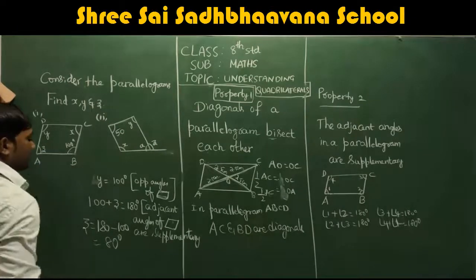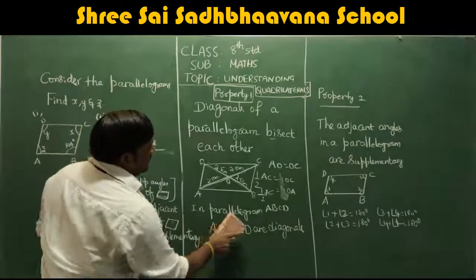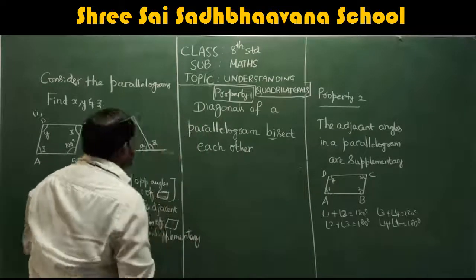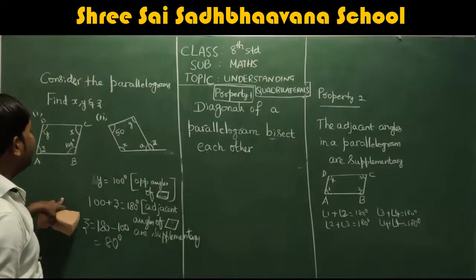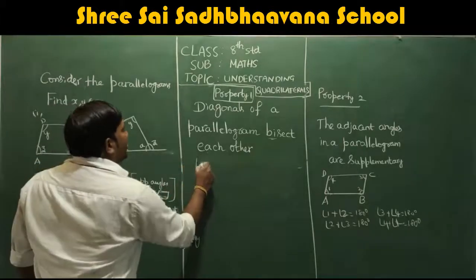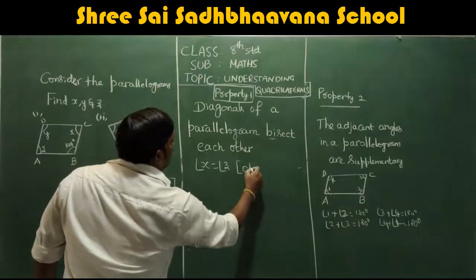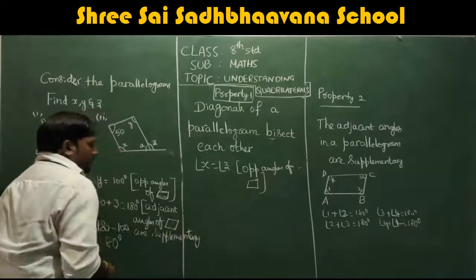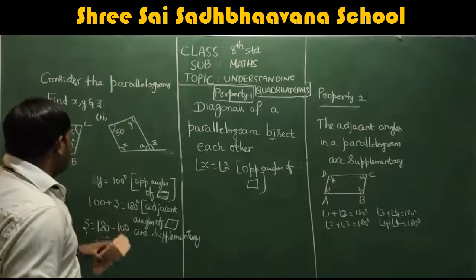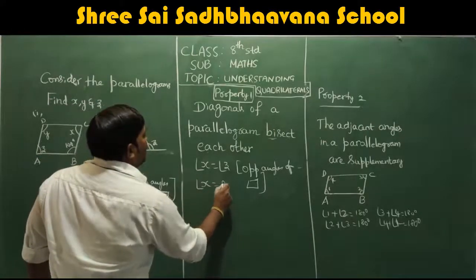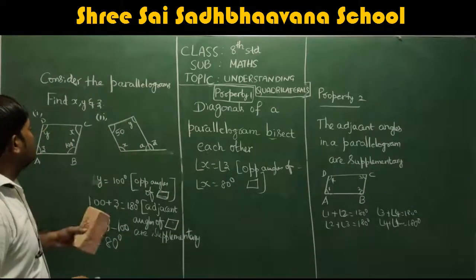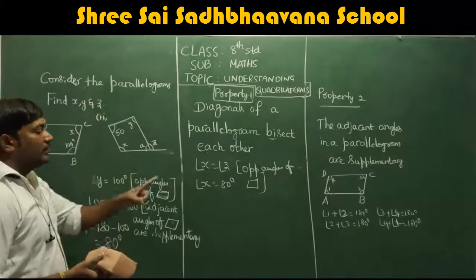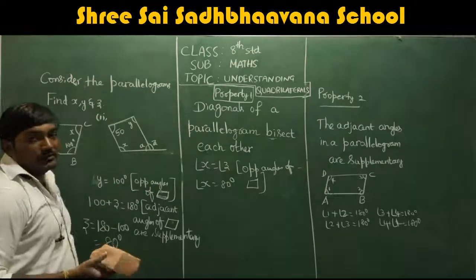If Z is 80 degrees, then X equals Z because X and Z are opposite angles. Opposite angles of a parallelogram are equal, so X equals 80 degrees. So we got all values: Y equals 100 degrees, Z equals 80 degrees, and X equals 80 degrees. It is very simple — you just have to know the basic properties of the parallelogram.